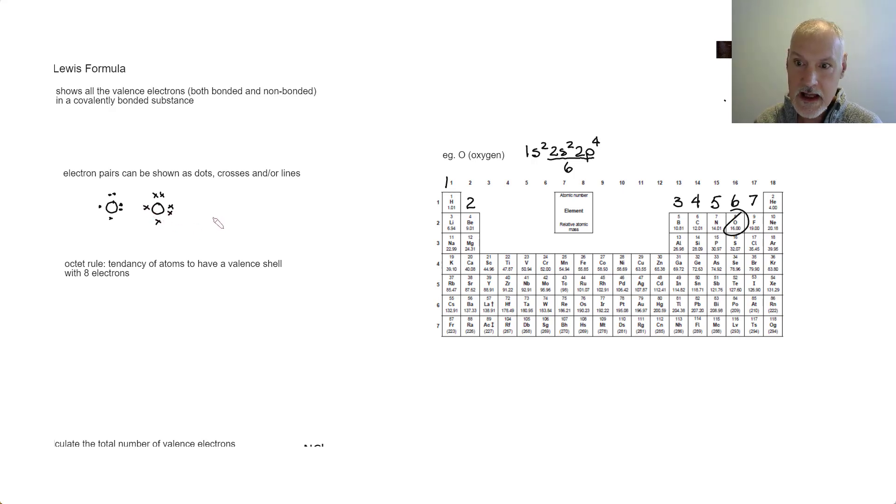We could also use x's instead. We could use lines. The lines though are reserved for pairs of electrons. So we could replace that pair and that pair with a line. But we still would need to have these. So these are all showing the same idea.